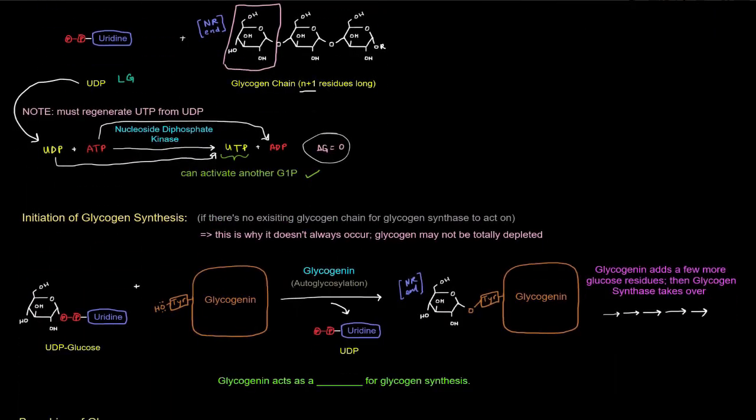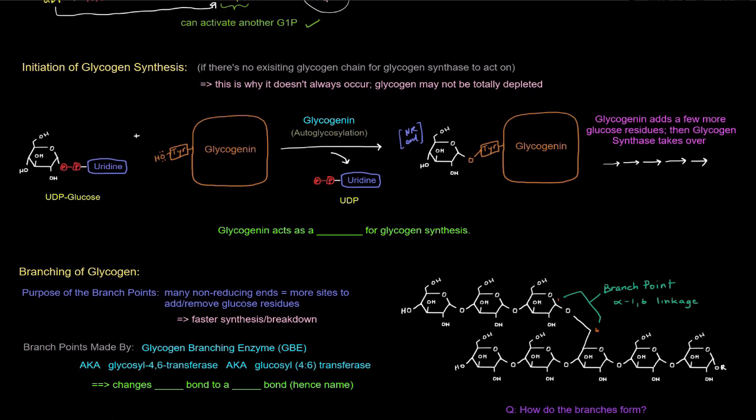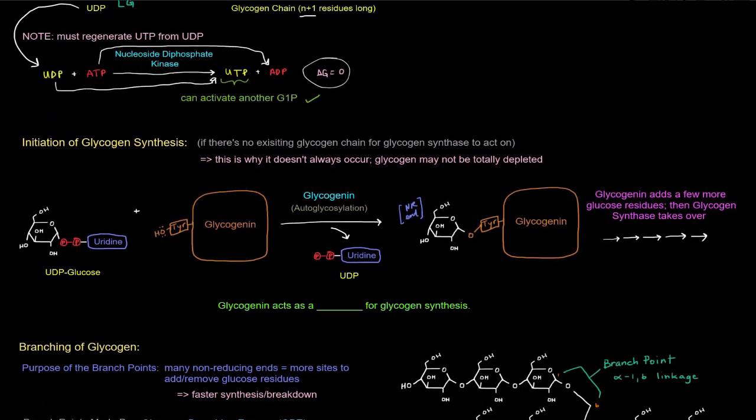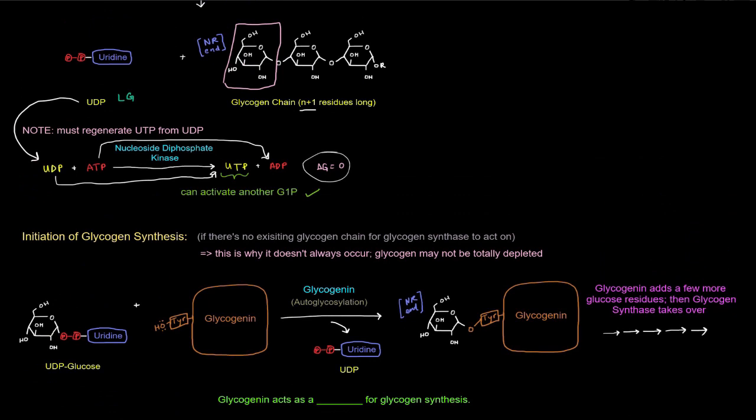So let's look at the initiation of glycogen synthesis. You might be wondering why I didn't show you the initiation of glycogen synthesis first. It's because it doesn't always occur. So initiation of glycogen synthesis occurs if there's no existing glycogen chain for glycogen synthase to act on.